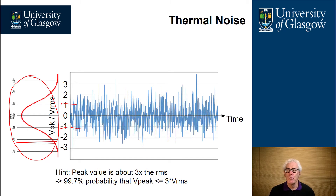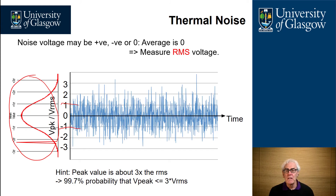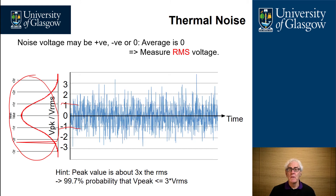This can be important when looking at the overload performance of circuits. If you design for the RMS value of overload in the circuit, you may find that you cannot deal with the peaks, which are three times larger. Noise voltage can be positive, negative, or zero — it's purely statistical in nature. Because of that, we always measure the root mean square, or RMS, value of the noise voltage.